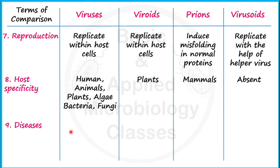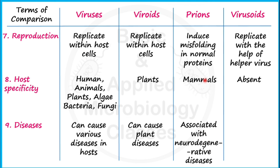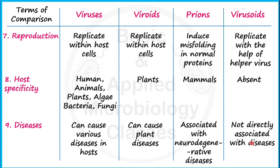Regarding diseases: viruses cause various diseases in plants, animals, and humans depending on the host. Viroids cause diseases only in plants. Prions cause diseases in mammals only, generally associated with neurodegenerative diseases — meaning brain and neuron damage. Virusoids are not directly associated with diseases, as it is the helper virus that is primarily responsible for disease causation.